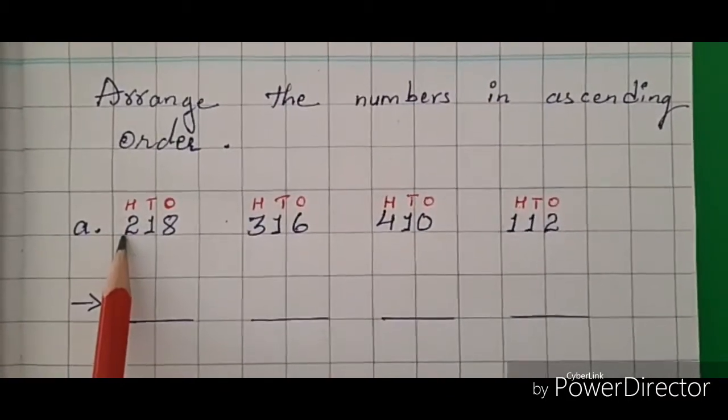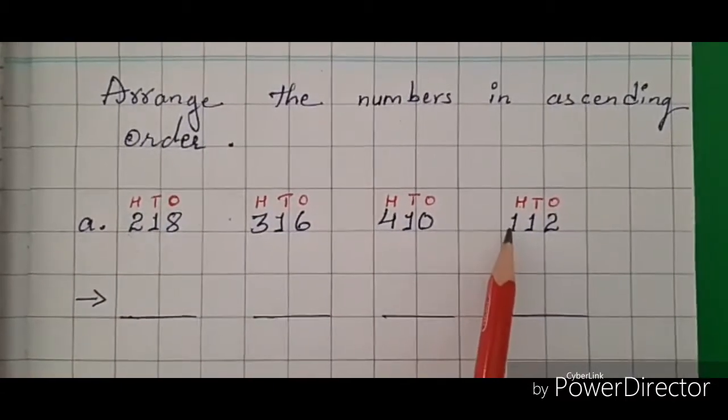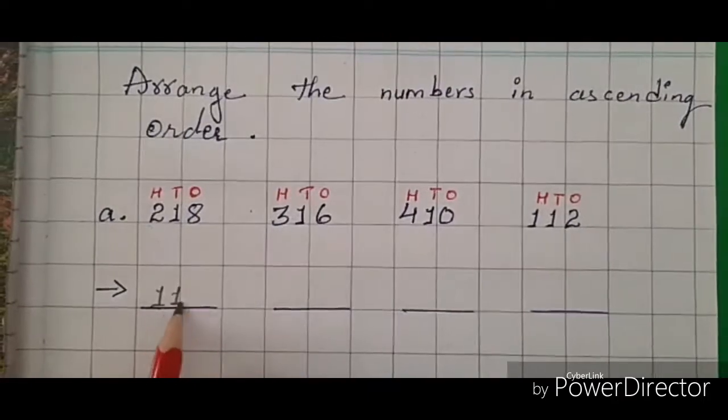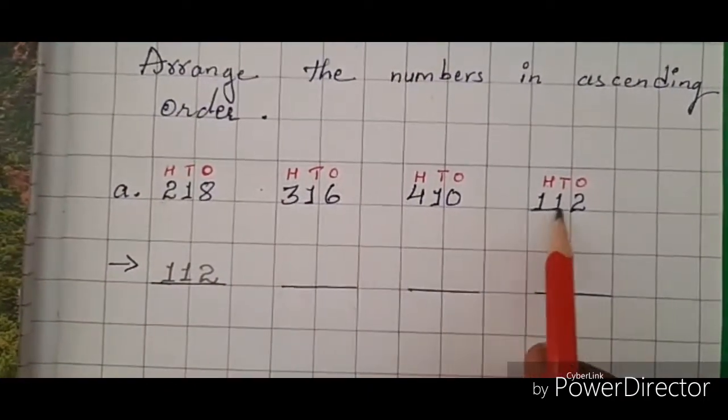Yes, number 1. So the first number is 112. Now let's see in the next three numbers which is the smallest number in hundreds place.